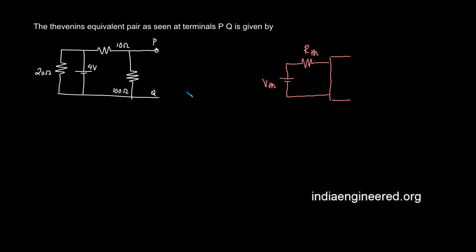We have to remove this unknown network. Now we have to find out the Thevenin's resistance. In order to find the Thevenin's resistance, the procedure is we have to open circuit any current sources to make it zero.